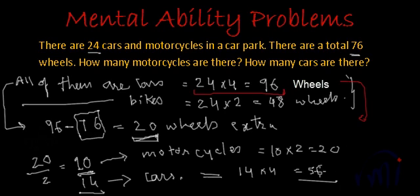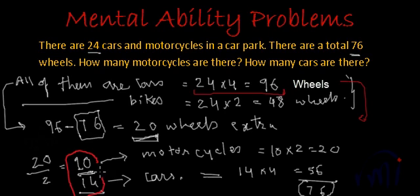What is the total? 20 plus 56: 0 plus 6 is 6, and 5 plus 2 is 7 — that is 76. We are getting total 76 wheels if there are 10 motorcycles and 14 cars. So we have 10 motorcycles and 14 cars in the car park.